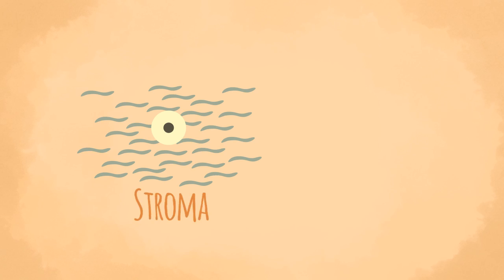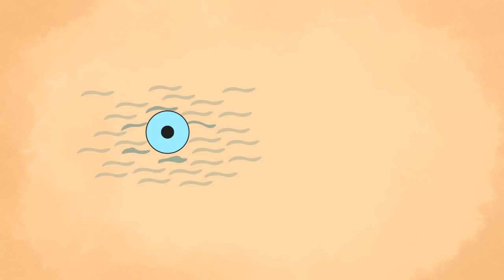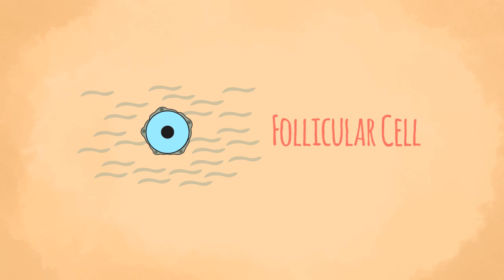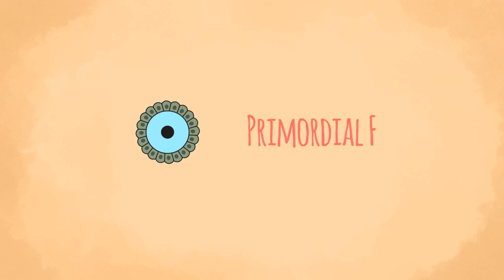Formation of ovarian follicle: The oogonia are surrounded by other cells that form the stroma. These stromal cells form ovarian or Graafian follicles that surround ova and protect them. Some cells of the stroma become flattened and surround an oocyte; these flattened cells ultimately form the ovarian follicle and are therefore called follicular cells. The flattened follicular cells then become columnar, and follicles up to this stage of development are called primordial follicles.